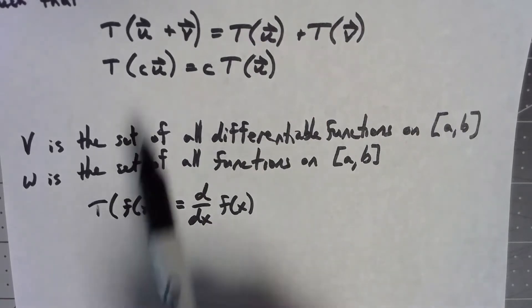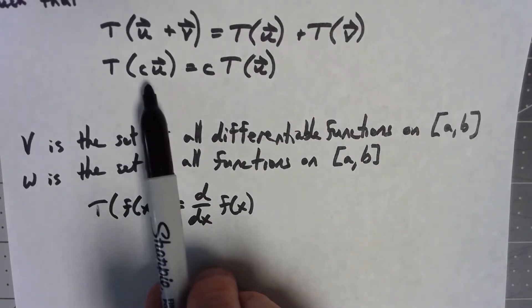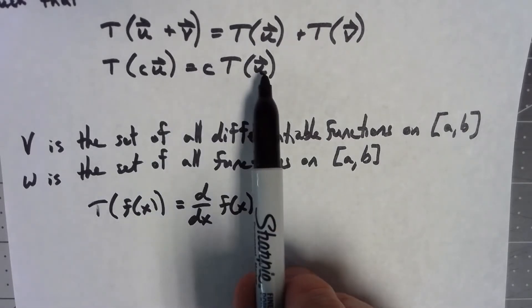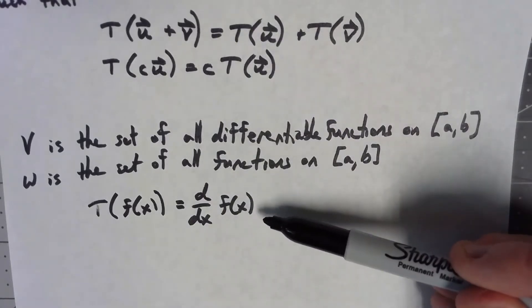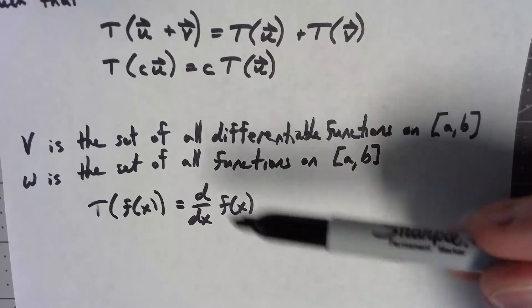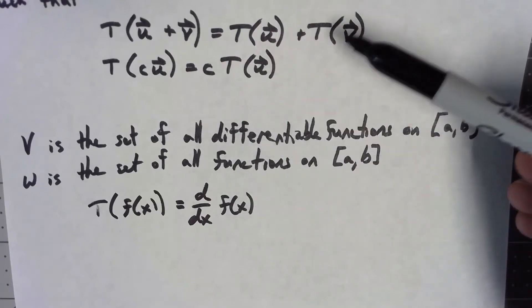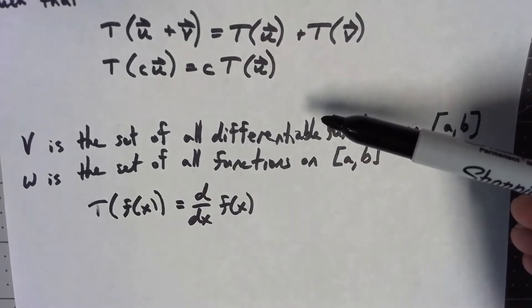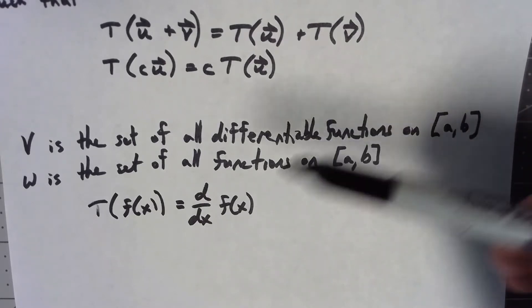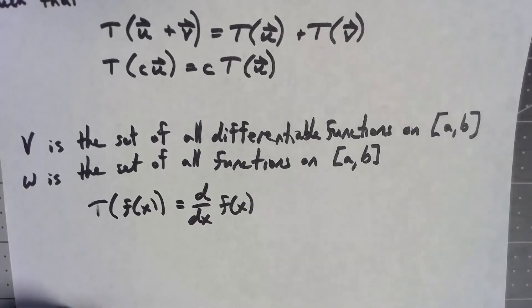Similarly, if I try and take the derivative of a constant times a function, that's the same thing as that constant times the derivative of the function. So taking the derivative does preserve scalar multiplication. Since this transformation preserves both addition and scalar multiplication, and again, together with the fact that these are vector spaces, that makes this a linear transformation.